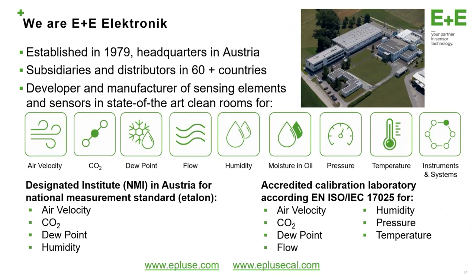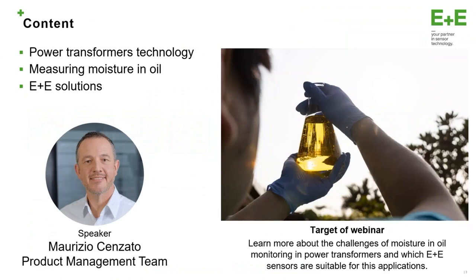Here in Austria, we are a designated institute to maintain the national measurement standard for air velocity, CO2, dew point, and humidity. In addition, our accredited calibration laboratory can release accredited calibration certificates for air velocity, CO2, dew point, flow, temperature, pressure, and humidity. I am Maurizio Cenzato, the speaker of today. I am from the product management team, and the target of this webinar is to learn something more about the challenges of moisture in oil monitoring in power transformers, and which ENDE sensors are suitable for these applications.